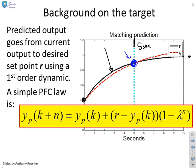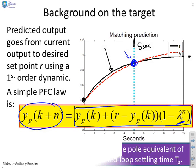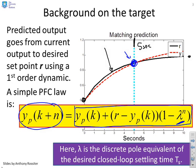So that's given by this equation here. You can see the output prediction n steps ahead matches the target, which is this expression over here. Now within this expression there's a lambda, and just a reminder that that lambda is the discrete pole equivalent of a desired closed loop settling time, and they're linked by this expression here.